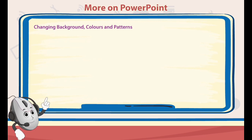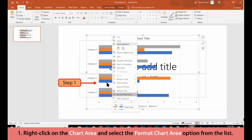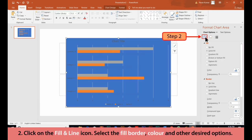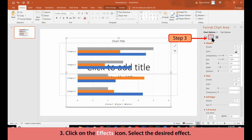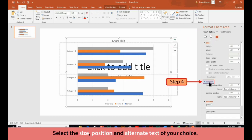Changing Background, Colors and Patterns. Follow these steps to change the colors, pattern and background of a chart. 1. Right-click on the Chart Area and select the Format Chart Area option from the list. A Format Chart Area dialog box appears. 2. Click on the Fill and Line icon. Select the Fill, Border, Color and other desired options. 3. Click on the Effects icon. Select the desired effect. 4. Click on the Size and Properties icon. Select the Size, Position and alternate text of your choice.